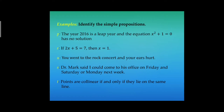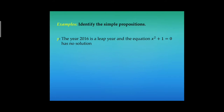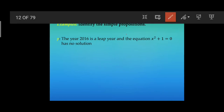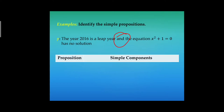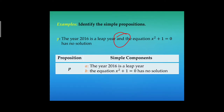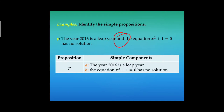We have propositions P, R, U, S, and T as examples. In our first example, there are two component statements connected by the word 'and.' Our first simple proposition A would be: the year 2016 is a leap year. And our second proposition B would be: the equation x² + 1 = 0 has no solution.